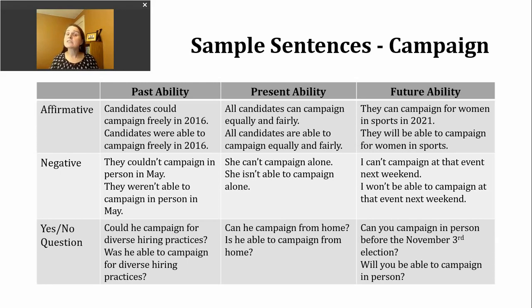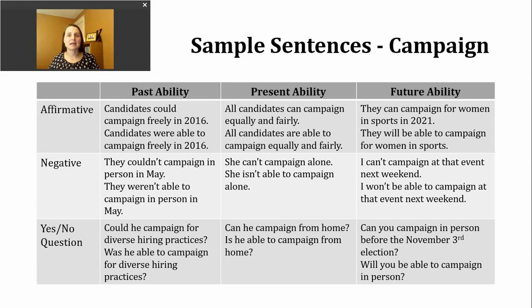If I want to make a yes or no question about someone's present ability, I can start with my modal can, then my subject, and then the base verb. Or I can use the present form of be, my subject, able to, and the base verb. For example: Can he campaign from home? Is he able to campaign from home?